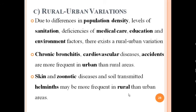Rural-urban variation exists due to differences in population density, levels of sanitation, deficiencies of medical care, education, and environmental factors. For example, chronic bronchitis, cardiovascular disease, and accidents are more frequent in urban than rural areas. Skin and zoonotic diseases and soil-transmitted helminths may be more frequent in rural than urban areas.